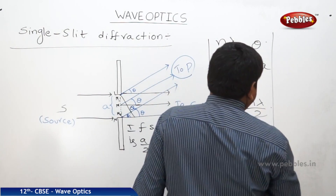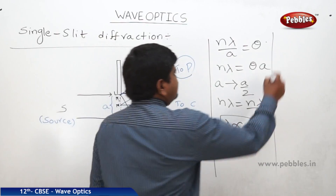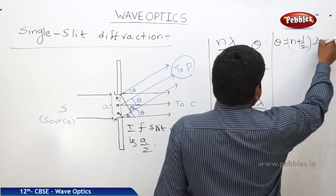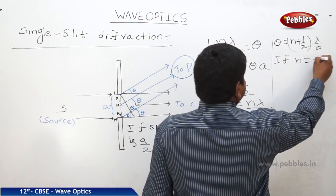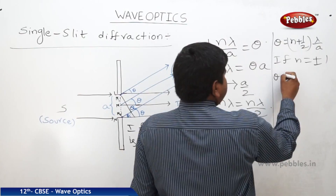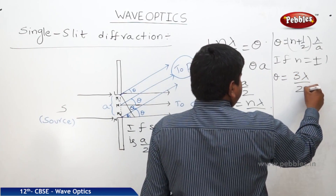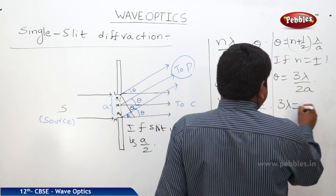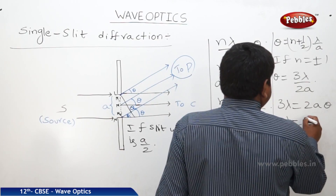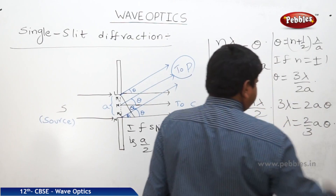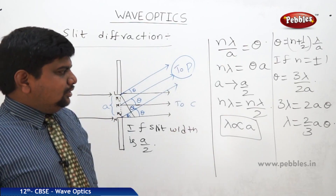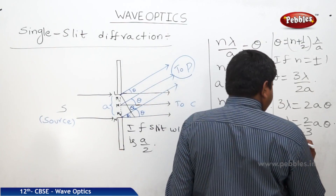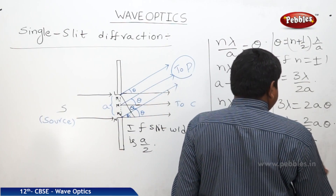For bright fringes, theta is equal to N plus half into lambda by A. If N is equal to plus or minus 1, therefore theta is equal to 3 lambda by 2A. So 3 lambda equals 2A theta, and lambda equals 2 by 3A theta. We know that aperture is 3 by 2, so 3 by 2 and 2 by 3 will cancel, and lambda will get proportional to theta.